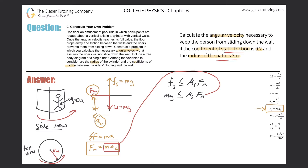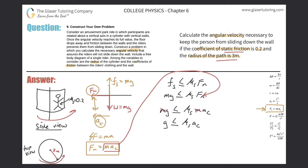Plugging that in: mg ≤ μs × m × ac. We can cancel the masses, which simplifies things: g ≤ μs × ac. I chose centripetal acceleration because I know there's a force pointing toward the center. And I also know I need to incorporate the radius into my formula — and there's a relationship between centripetal acceleration and radius, which will take a couple of steps.